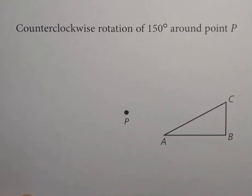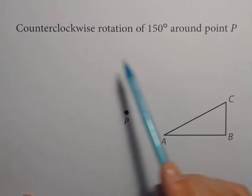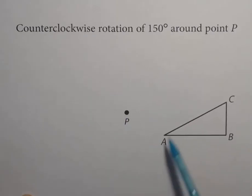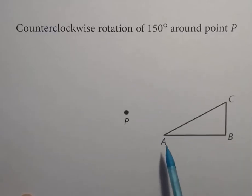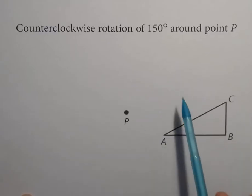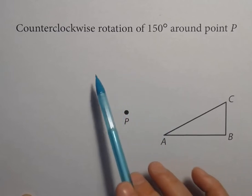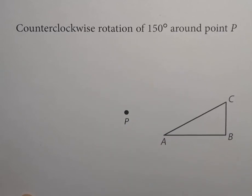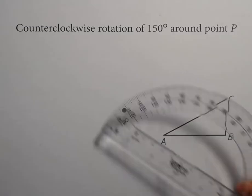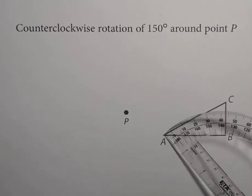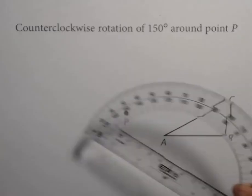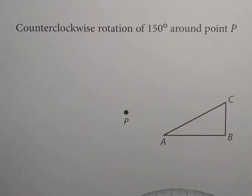Counterclockwise means in the opposite direction that the hands of a clock spin. So the hands of a clock spin this way, so counterclockwise is in the opposite direction. This entire triangle is going to rotate 150 degrees counterclockwise around point P. The way we're going to do that is use a protractor to draw angles connecting each point to their new locations, and each angle will be 150 degrees.